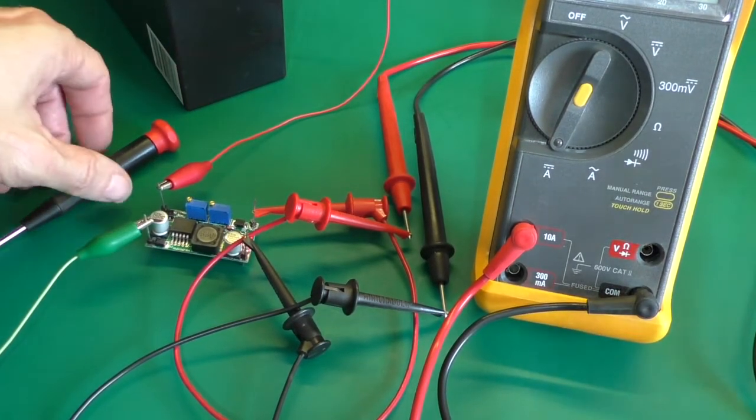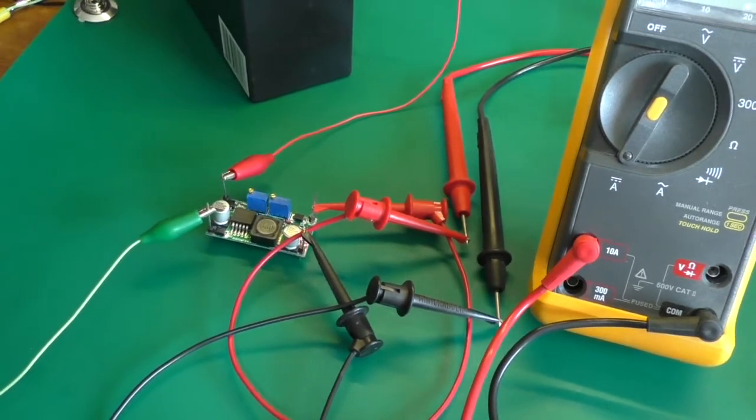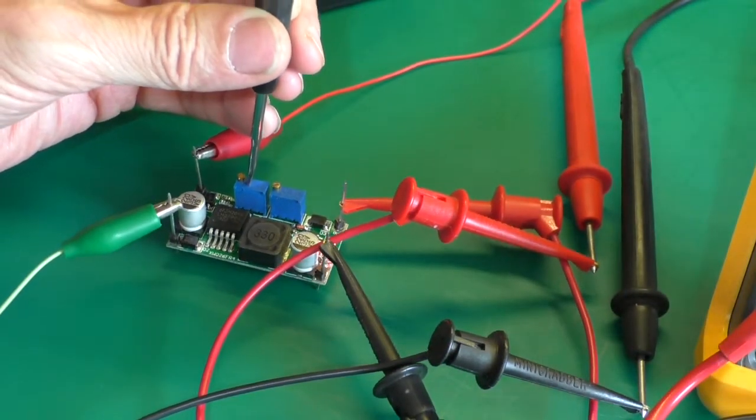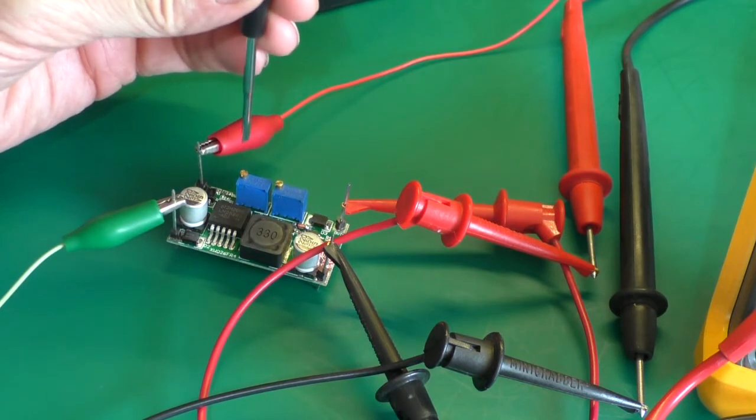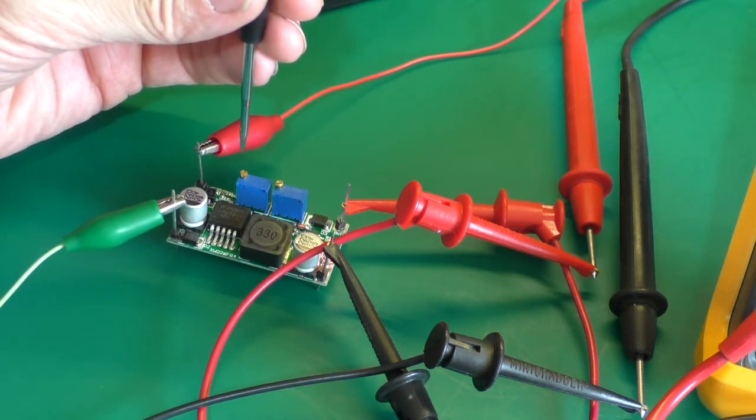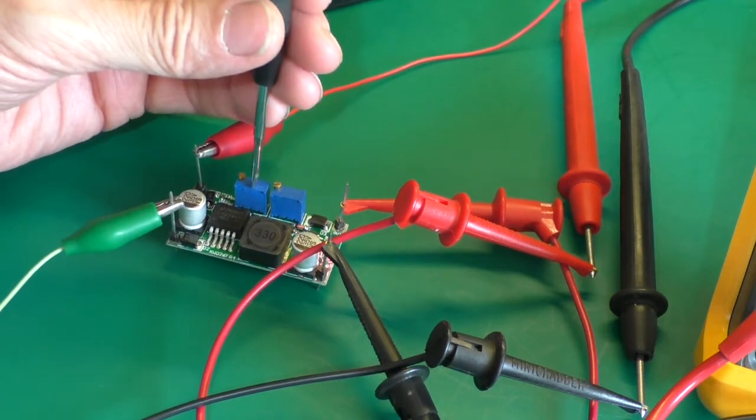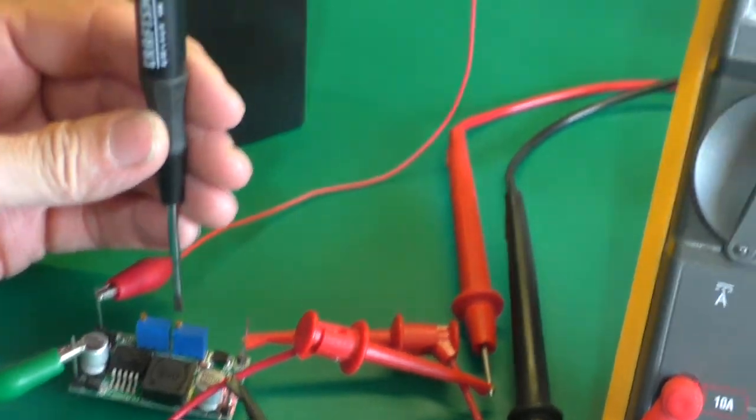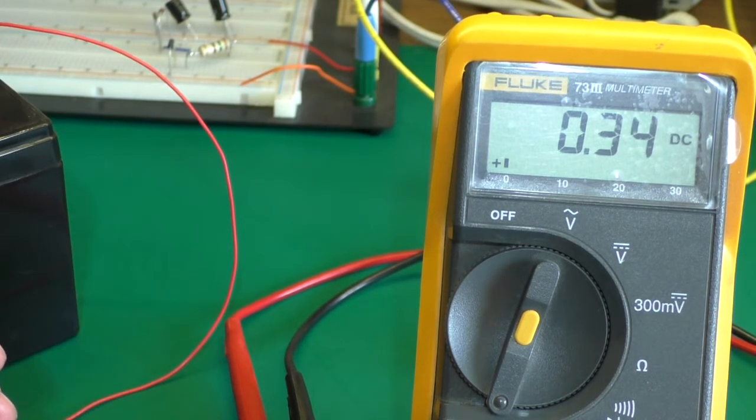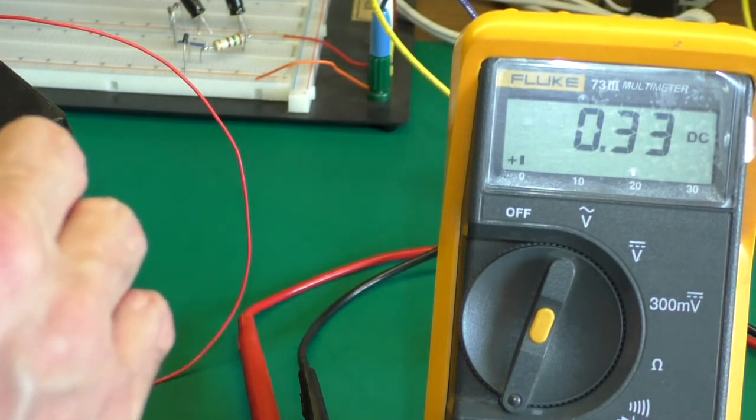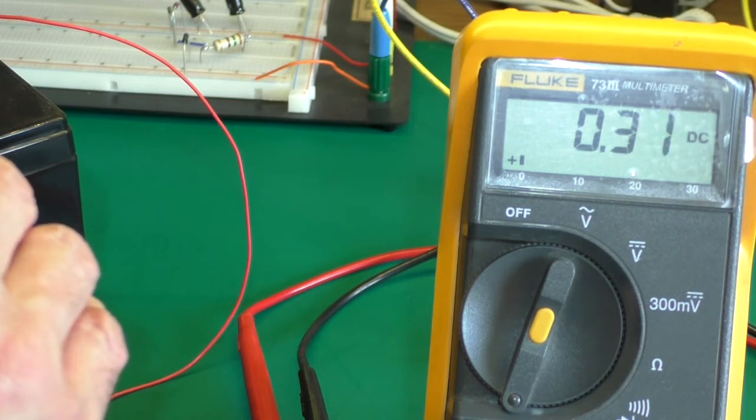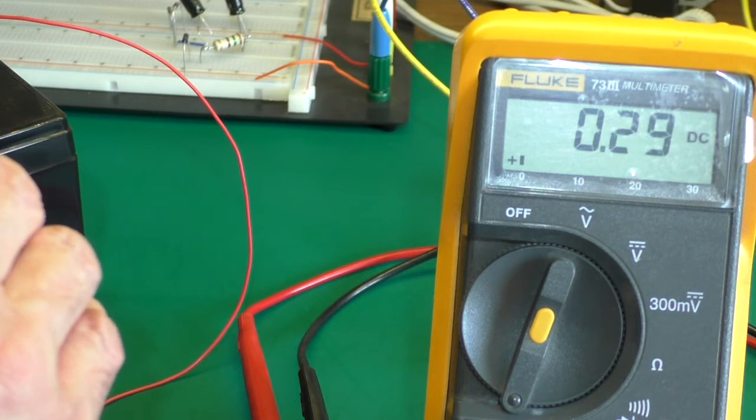Now when we're adjusting the current, I don't know if this is the way it is just in China or what. But usually any pot you turn clockwise, you increase whatever you want to do. It's voltage or like on a stereo, you want to increase the volume you turn it clockwise. Which works on this. You turn it clockwise, the voltage goes up. It's the exact opposite on the current. If you turn it counter clockwise, it increases current. If you turn it clockwise, it decreases current. It's not a big deal, it's just a little annoyance.